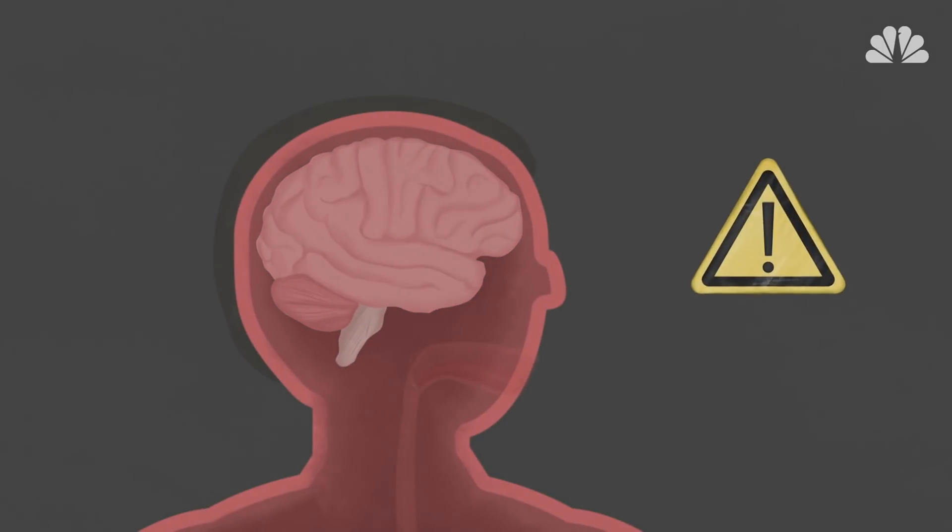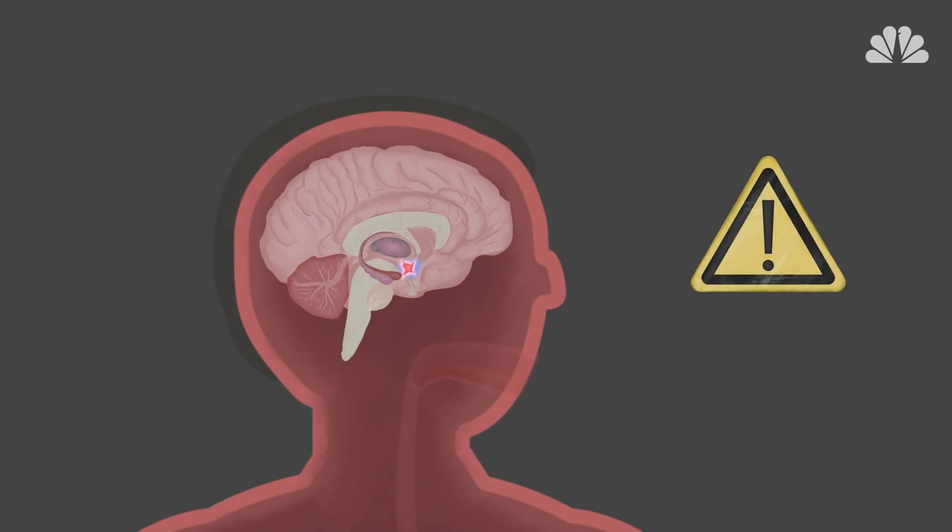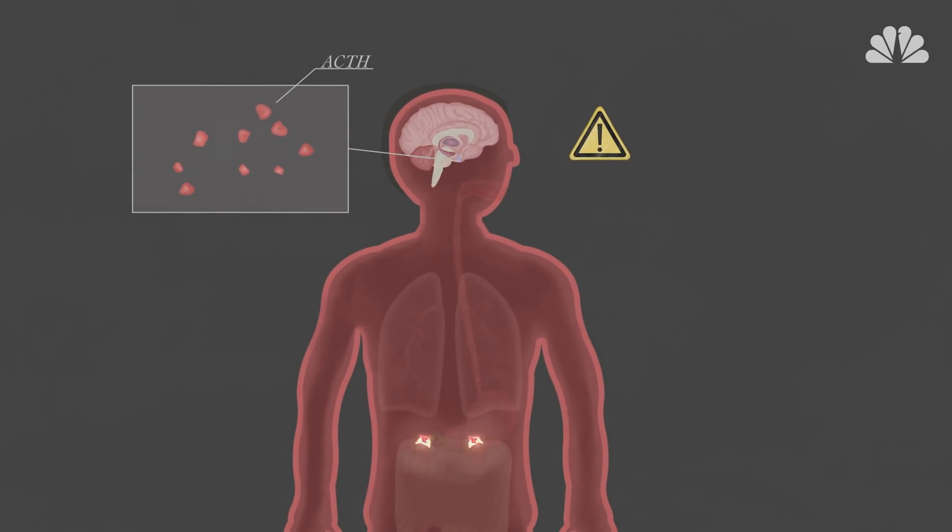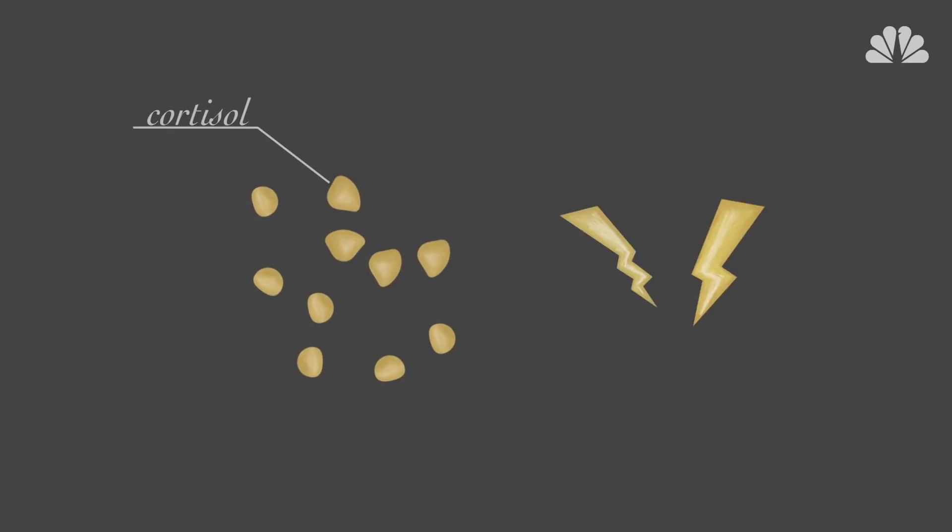If your brain feels you're still in danger, the hypothalamus releases a hormone that travels to the pituitary gland, triggering the release of adrenocorticotropic hormone, or ACTH. That in turn travels to the adrenal glands, prompting them to release the hormone cortisol, so the body remains on high alert.